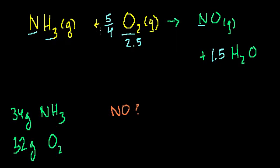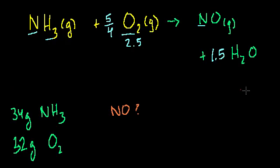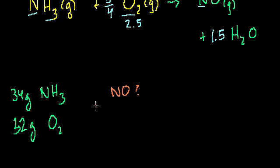We're not balanced yet — we can't leave this equation with weird decimal numbers. So let's multiply the entire equation by 4 to get rid of the denominator. If we multiply the entire equation by 4, we have 4 molecules of ammonia.